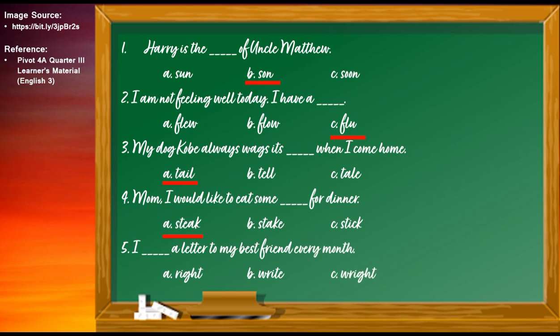Number five: I blank a letter to my best friend every month. The correct answer is LETTER B: I write a letter to my best friend every month.